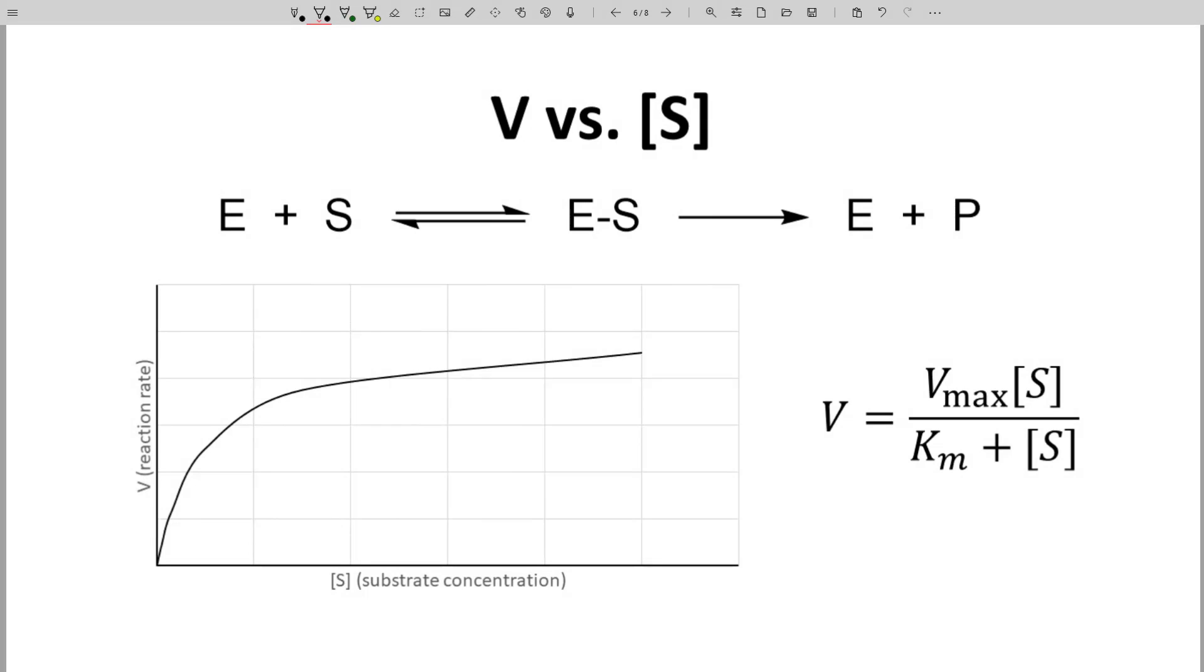We have three things on this screen. At the top is our reaction, which has been expanded to show more detail yet still simplified. Below is a graph of how the rate of the reaction, V, the y-axis, changes with the concentration of the substrate, S, the x-axis. An equation is on the right.